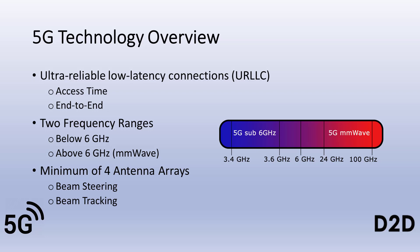Ultra-reliable low latency connections are a cornerstone new technology that will be available in 5G networks. Latency has two aspects: access time and end-to-end latency. The new 5G specification calls for a latency of less than one millisecond. 5G networks will operate in two primary frequency ranges in the US: below 6 GHz and above 6 GHz using millimeter wave technology.